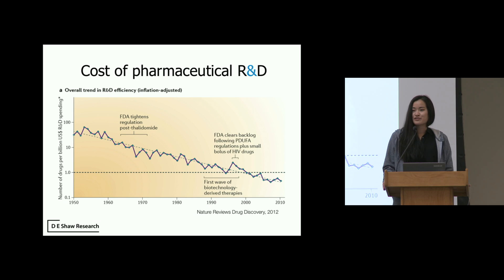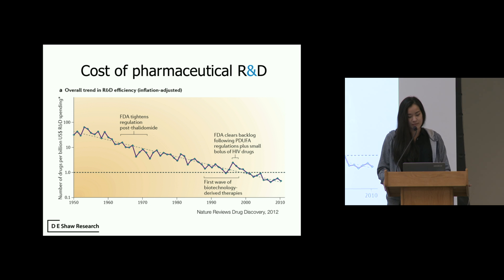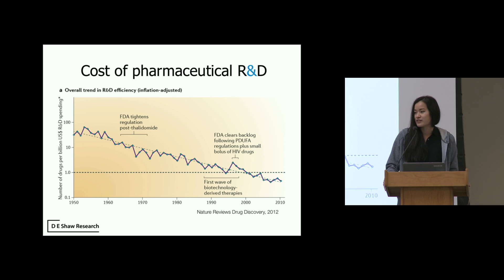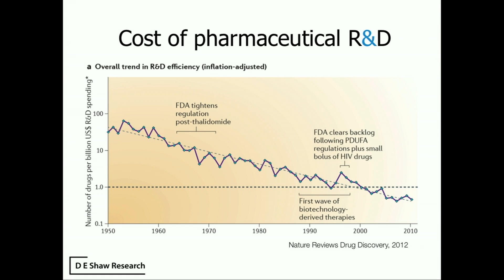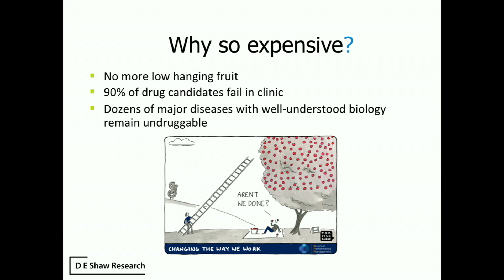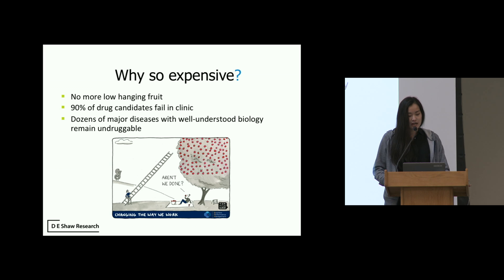To motivate why we're interested in the drug discovery process, this graph shows the number of new drugs brought to market per billions of dollars spent in research and development. The y-axis is a log scale. You can see that the cost per producing each new drug has been increasing exponentially over the last 50 to 60 years — so much so that currently we'd need to be spending over $1 billion on average to bring a new drug to market.